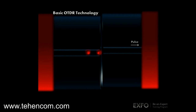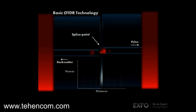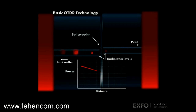One main function of an OTDR is to accurately measure splice loss. It does so by measuring the backscatter levels right before and after the splice.